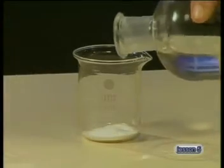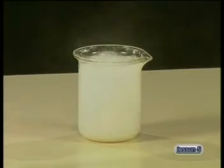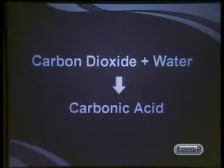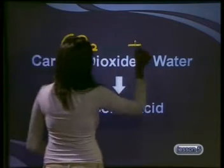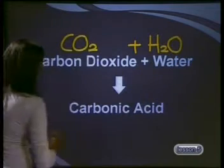Watch what happens when hydrochloric acid is added to a sample of calcium carbonate. The caves were not formed by hydrochloric acid but by carbonic acid. Carbonic acid is a weak acid that forms when carbon dioxide dissolves in water. Do you remember the chemical reaction for this dissolving process? It is: carbon dioxide plus water react to form carbonic acid.